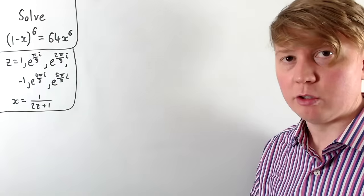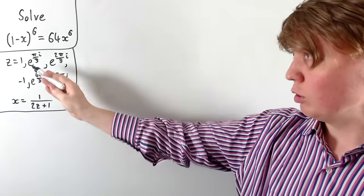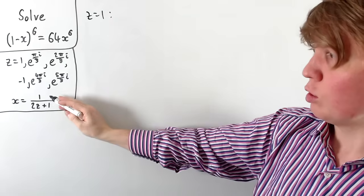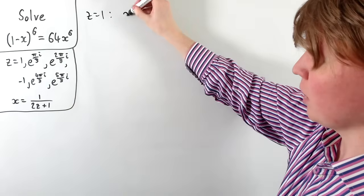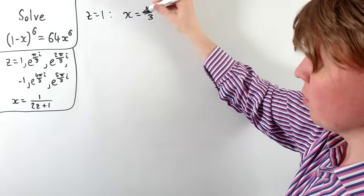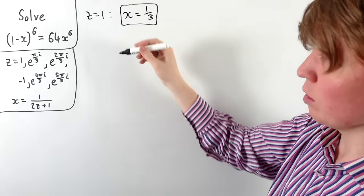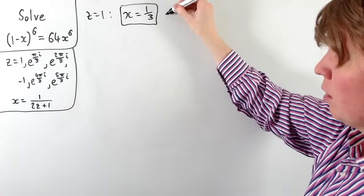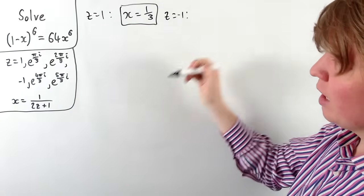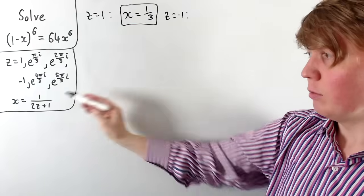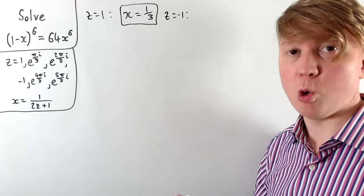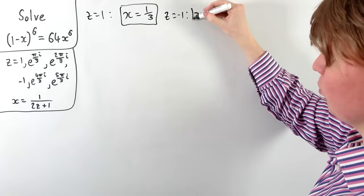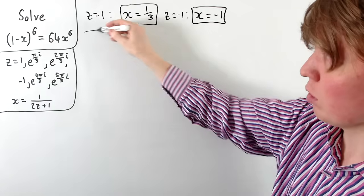Let's start with the real solutions. When z equals 1, we substitute in: x equals 1 over (2 plus 1), giving x equals 1/3 as our first real solution. When z equals negative 1, we substitute in: x equals 1 over (negative 2 plus 1), which is 1 over negative 1, so x equals negative 1. These are our two real solutions.